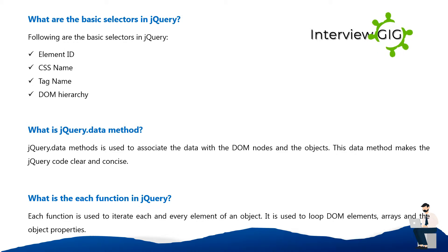What is the jQuery.data() method? The jQuery.data() method is used to associate data with DOM nodes and objects. This method makes the jQuery code clear and concise.